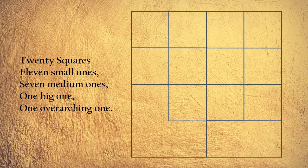The answer is 20 squares, 11 small ones, 7 medium ones, 1 big one, 1 overarching one. Next.